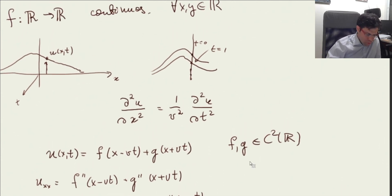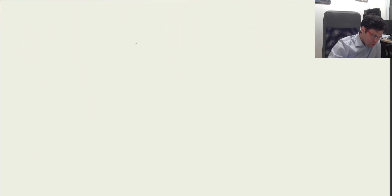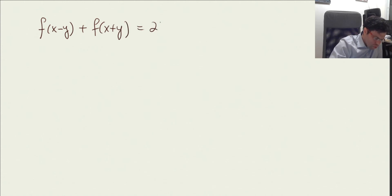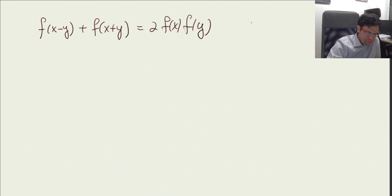What do we conclude from this? If we take the roles in this equation — f(x−y) + f(x+y) = 2f(x)f(y) — x plays the role of x, the velocity is 1, and y plays the role of time. Let us suppose for now that f is twice continuously differentiable and see how this helps us.